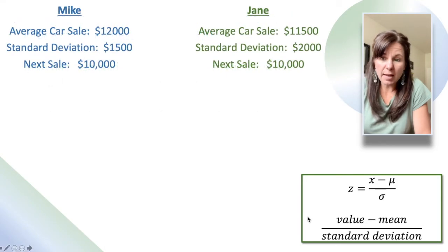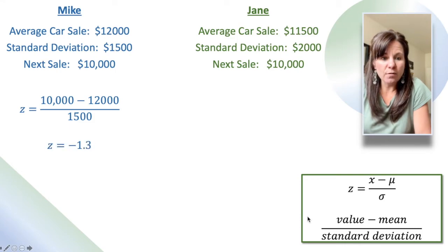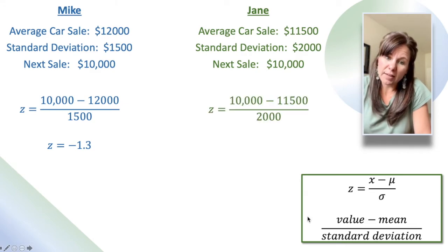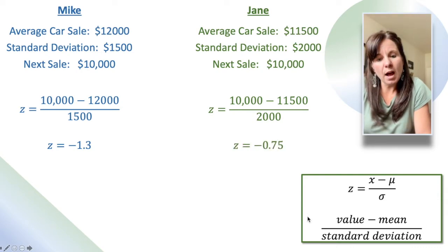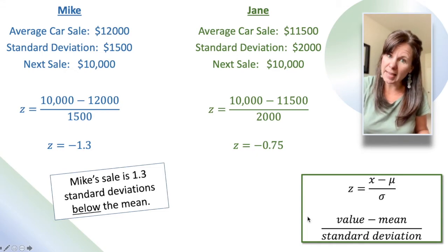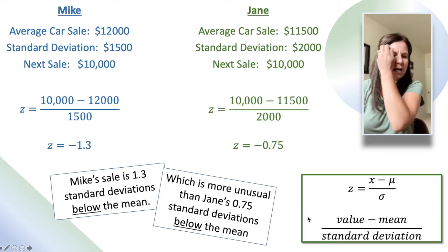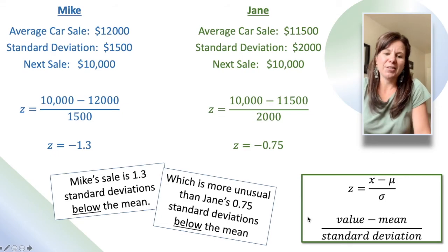So here we have Mike versus Jane. Let's take Mike's z-score first: 10,000 minus his average of 12,000, divided by his standard deviation, gives a z-score of negative 1.3. Now Jane: 10,000 minus her average of 11,500, divided by her standard deviation of 2,000, gives a z-score of negative 0.75. So Mike's sale is 1.3 standard deviations below the mean — that's what that negative means — which is more unusual. He's farther below the mean than Jane's 0.75 standard deviations below the mean.